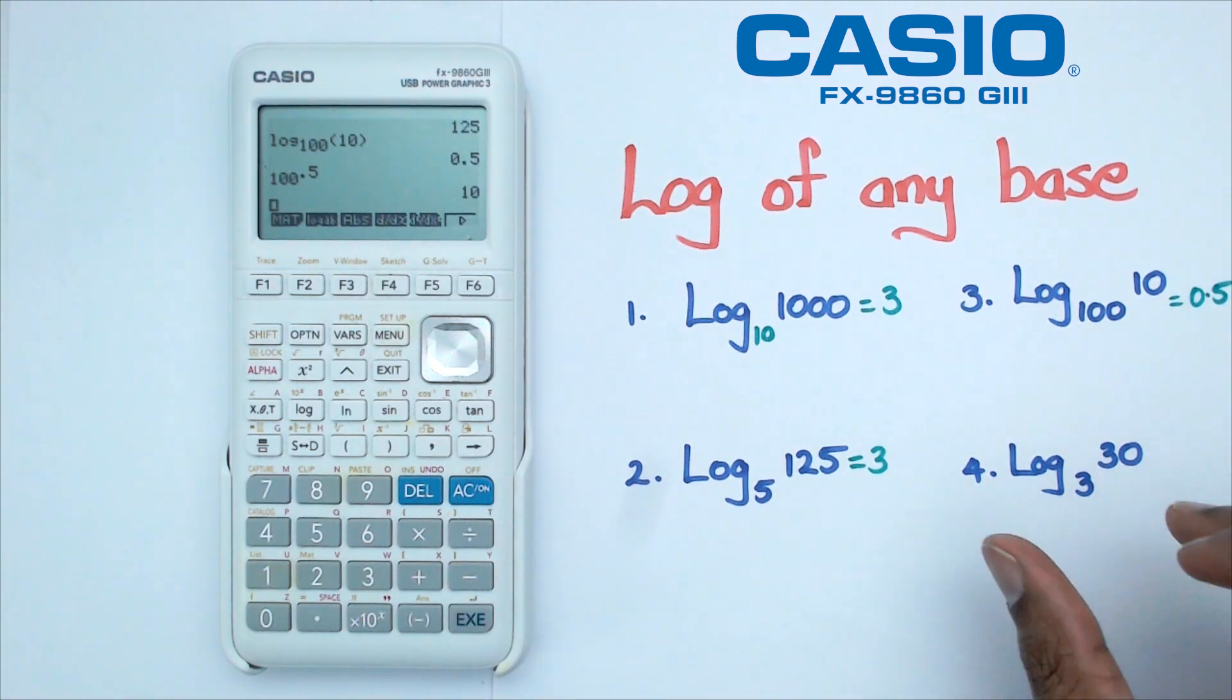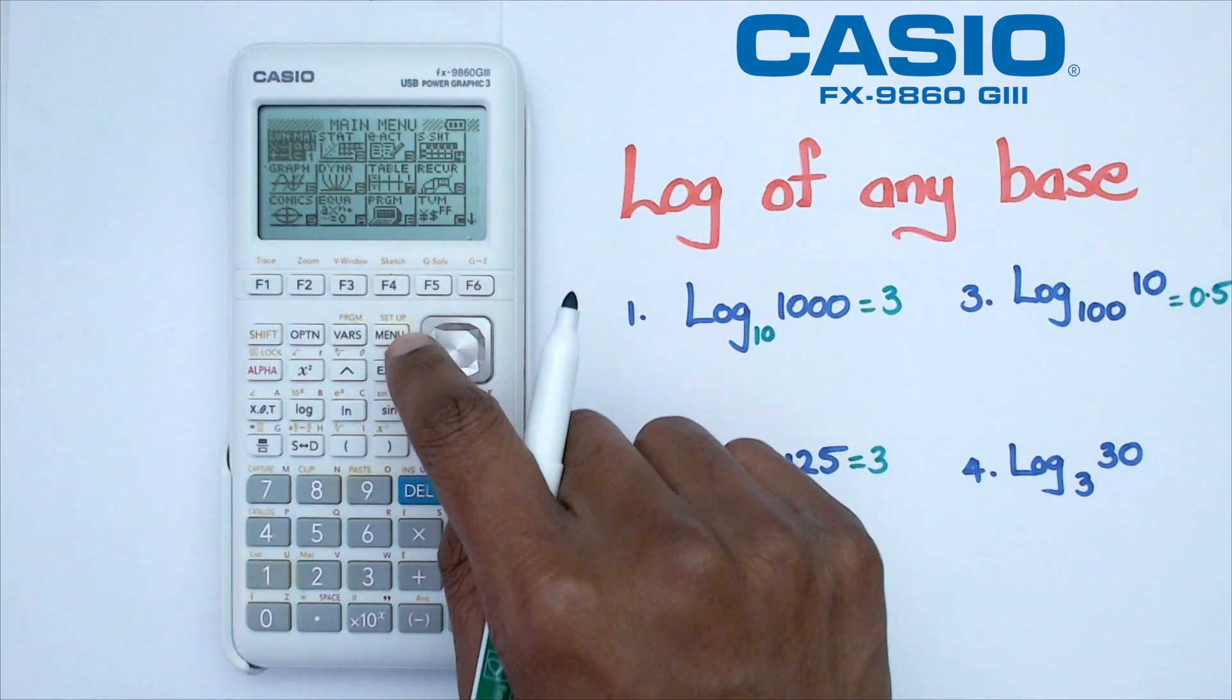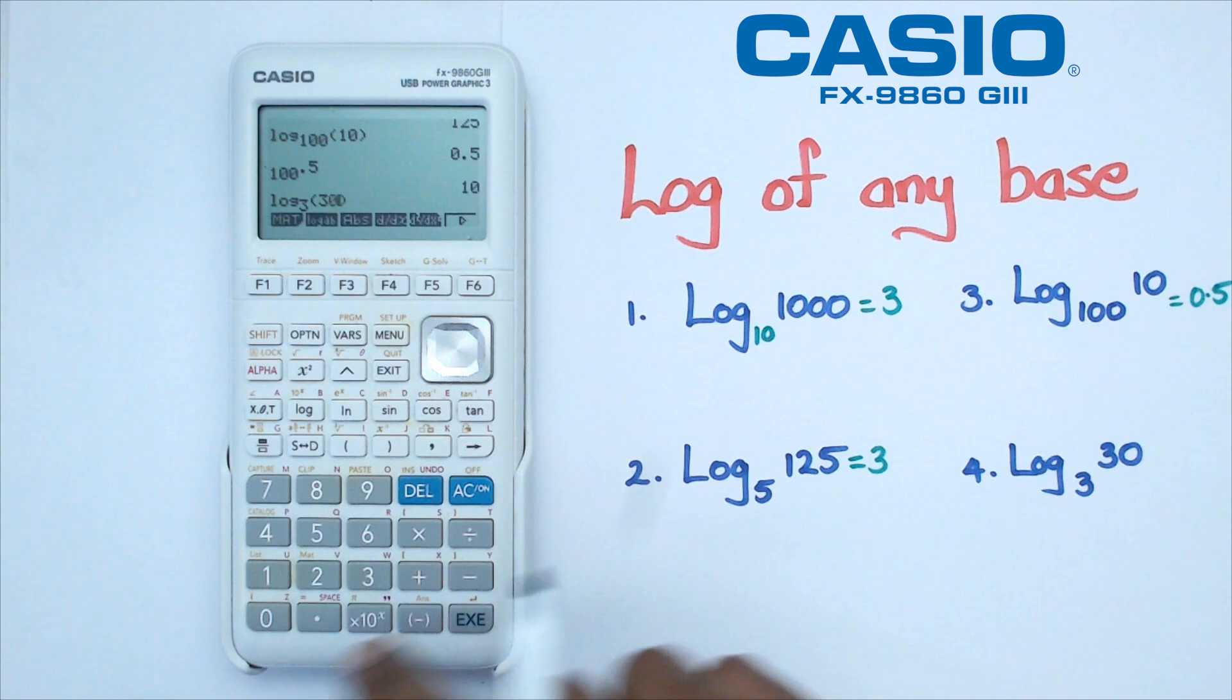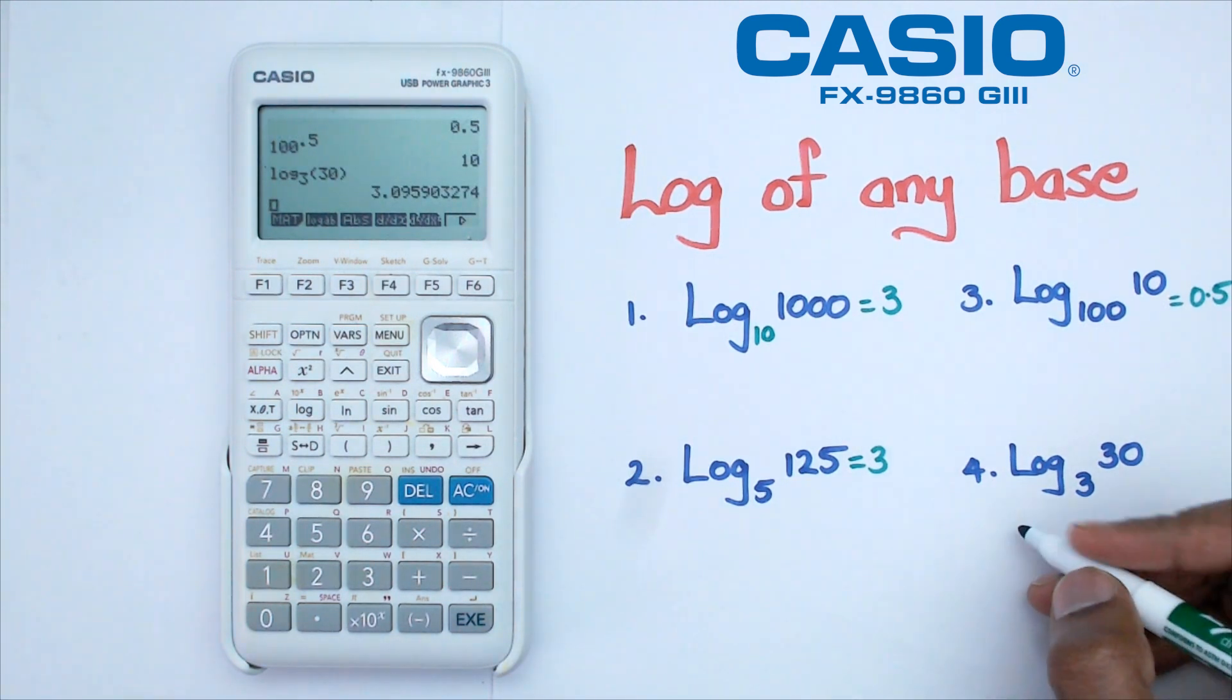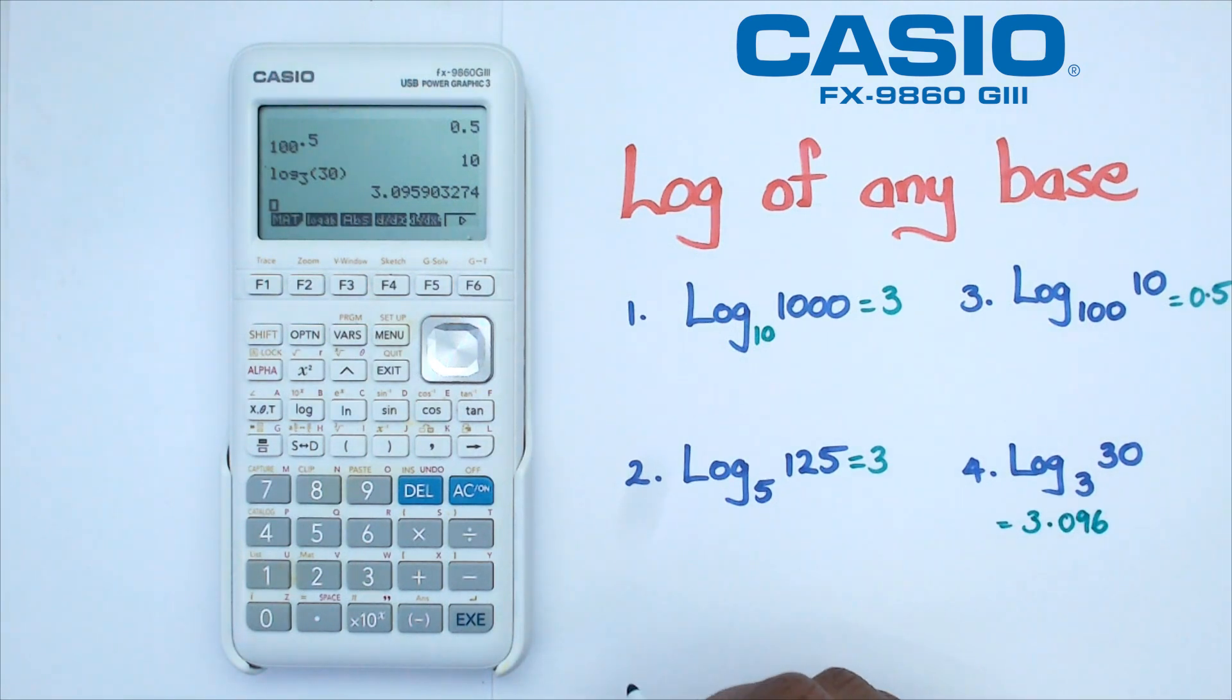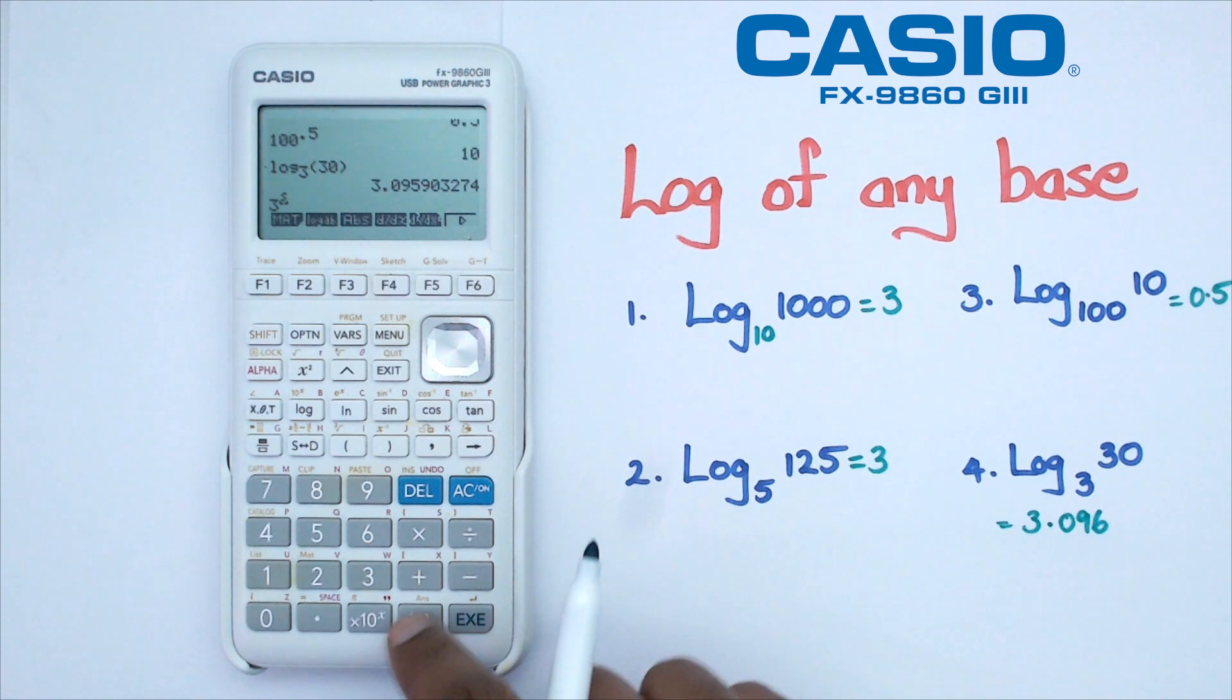But what about when I have some numbers that don't actually work out? So let's go back to main menu. Actually, I'm going to go to log AB. This time I'm going to put in three and 30. And as you can see, I'm getting an answer of 3.096. Basically, if I do three to the power of this answer, I should get equal to 30.